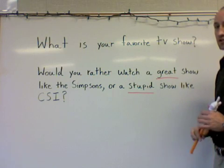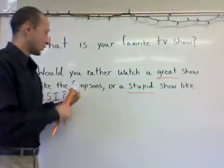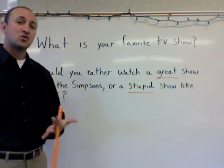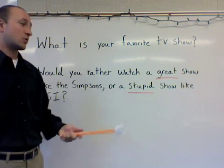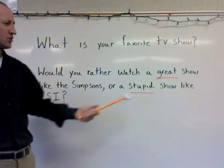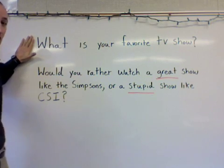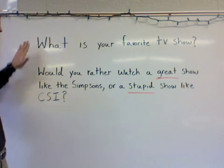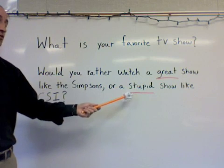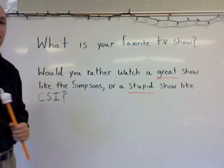This is a flawed question because it's going to create a bias. It creates a bias because it's telling you that one show is great and the other is stupid. So if you're asked this question on a survey, most people are more likely to agree with the show that's being called great. So our first question has no bias and no error, but in our second question there's a clear bias calling one show great and one show stupid — this question is definitely flawed because it has errors.